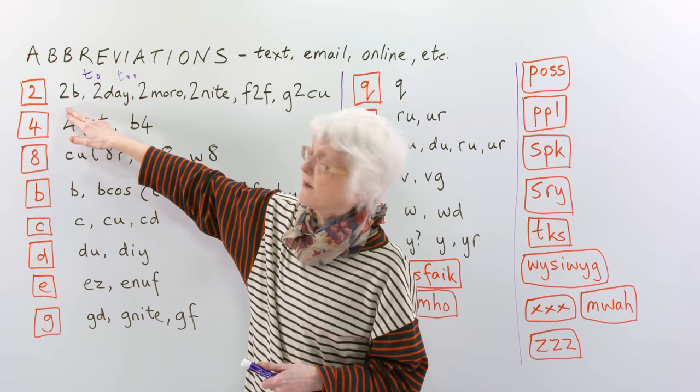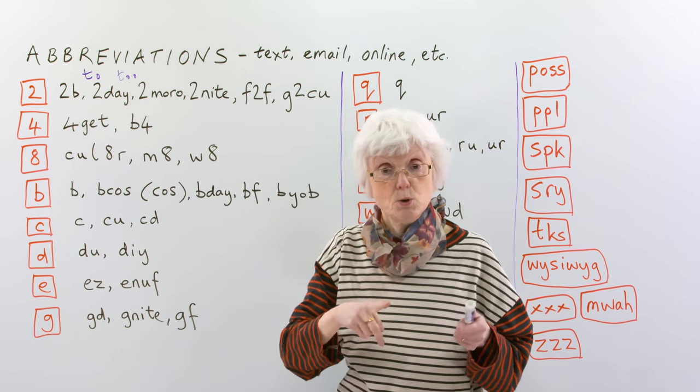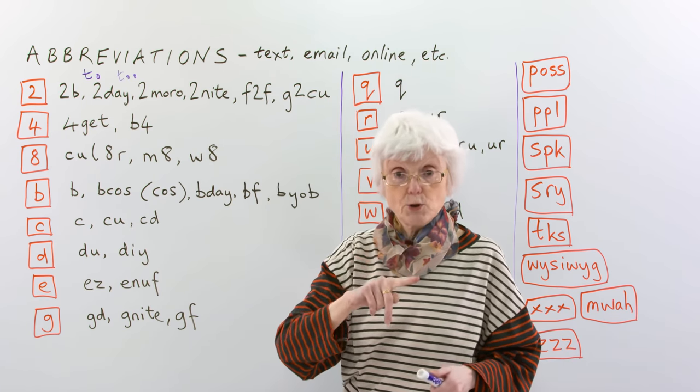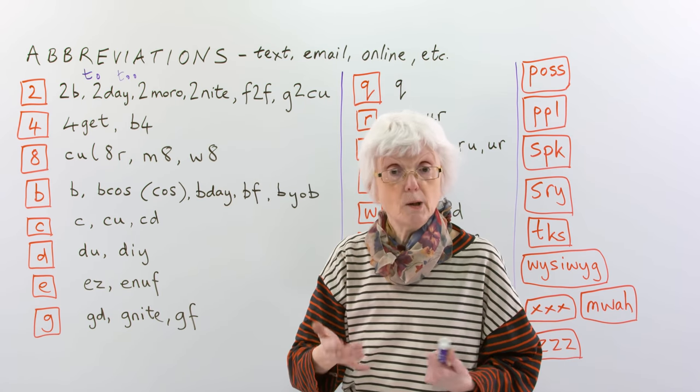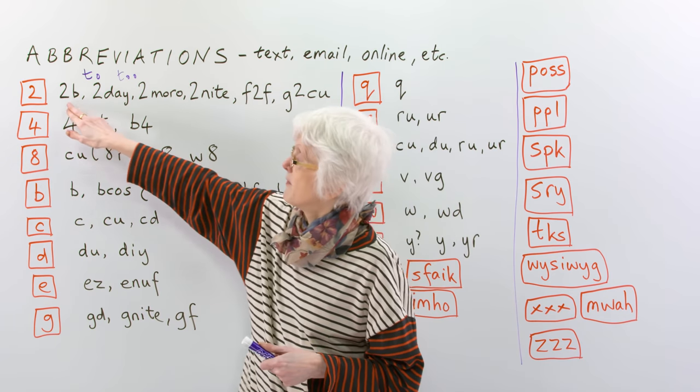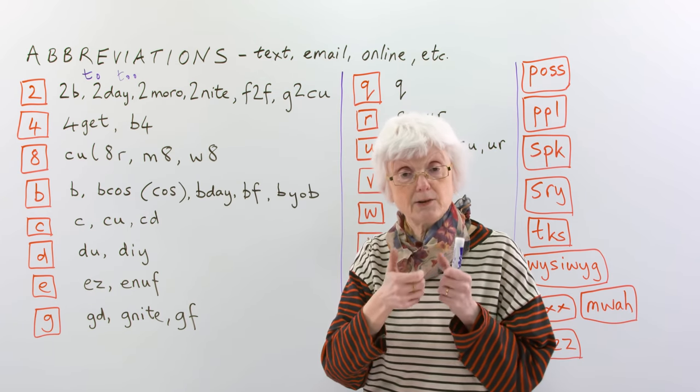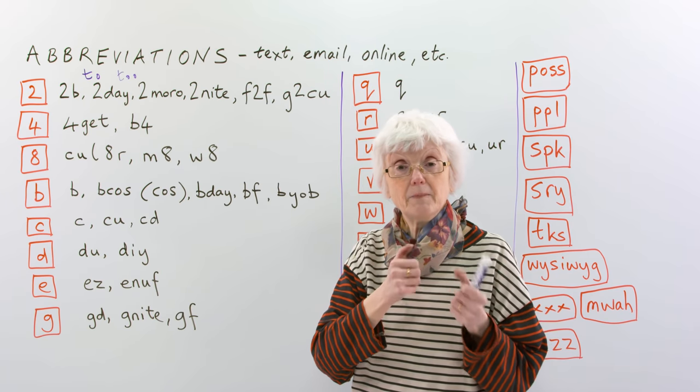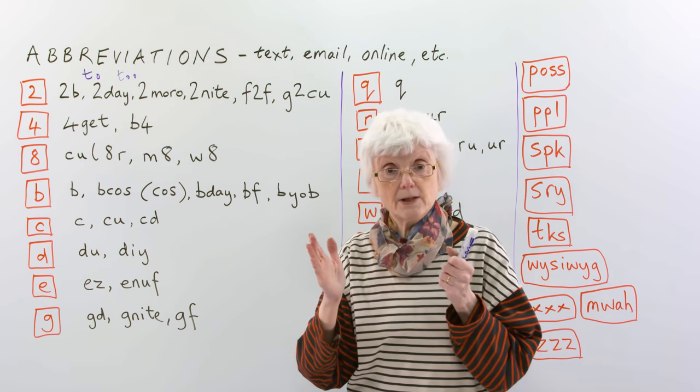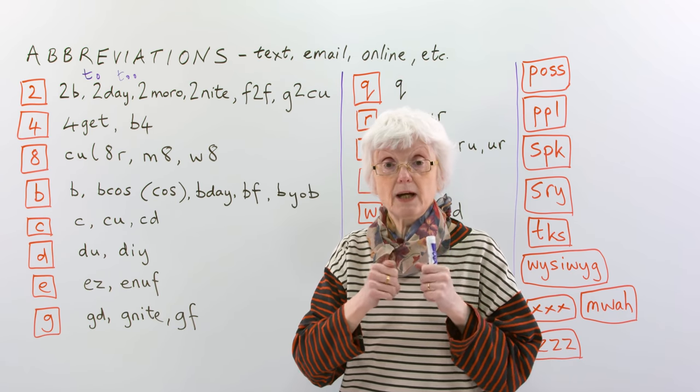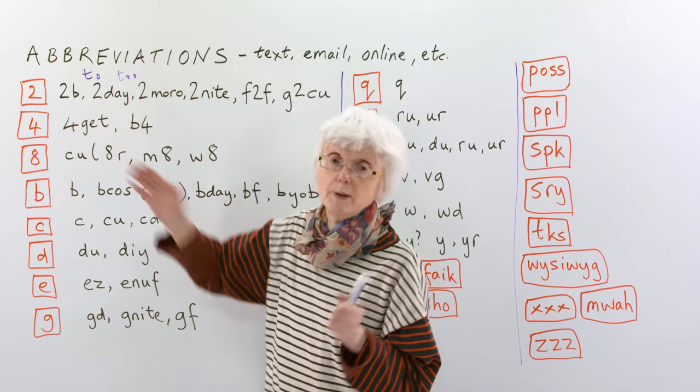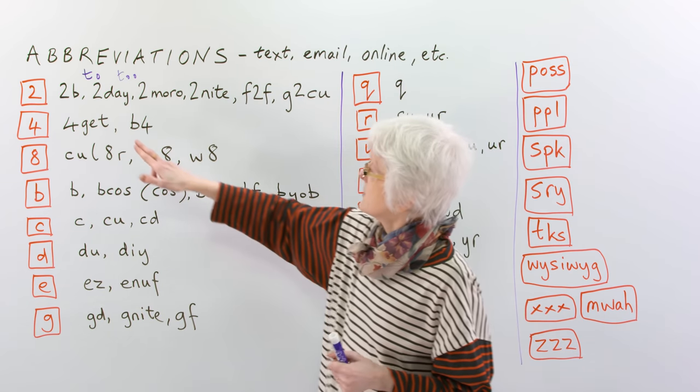So, if you say this, it's to be. You've got the letter B and the number two, to be. It's the verb. It's the verb to be. Okay? So, that's a very quick way, especially in a text message or maybe in Twitter as well, where you're limited to a certain number of characters.